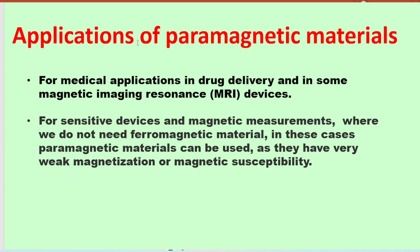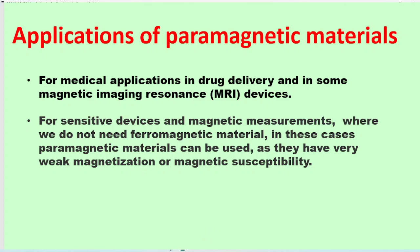What are the applications of paramagnetic materials? These materials are used for medical applications in drug delivery and in MRI (Magnetic Resonance Imaging) devices. They can also be used for sensitive measurements of magnetic materials where no ferromagnetic signal is needed, since paramagnetic materials have very weak magnetization or very low magnetic susceptibility. Thank you for watching — we will discuss another experiment in the next video.